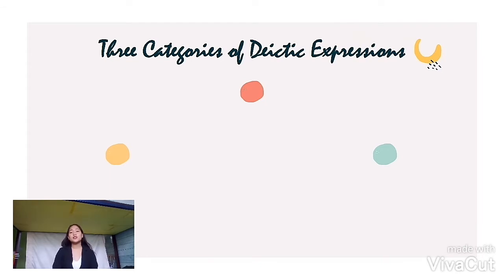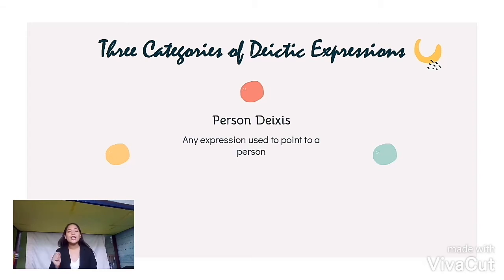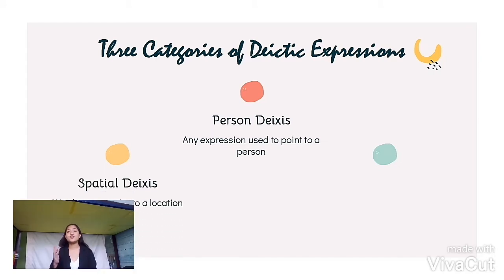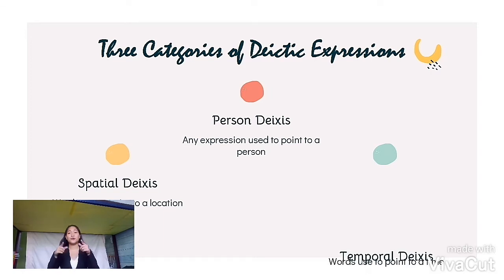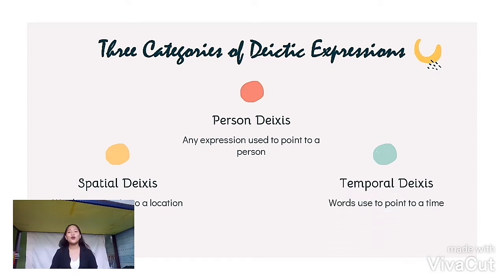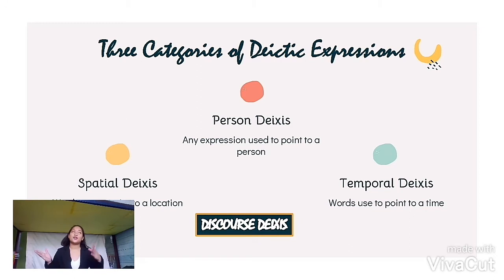Diactic expressions usually fall under three categories. It can be used to point to a person via person diaccess — say for example, me and you — or to a location via spatial diaccess — here or there — or to time via temporal diaccess — now, then, or tonight.